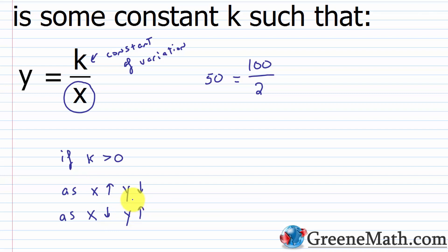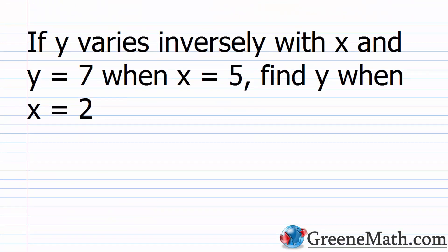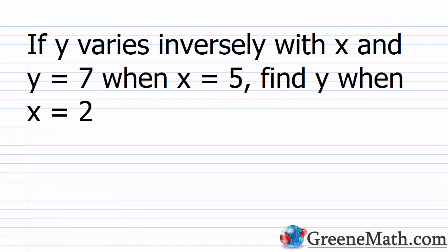This is the opposite of what we saw with direct variation, where as x went up y went up, and as x went down y went down — again, when k is positive. So let's jump in and look at a typical problem. You solve these problems the same way you approach them with direct variation.